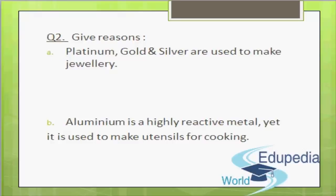Question number 2: Give reasons. First, why are platinum, gold and silver used to make jewelry? Silver, gold and platinum occur towards the bottom of the activity series and they are less reactive metals.